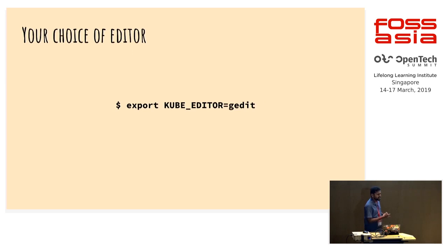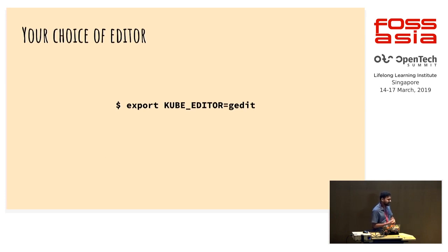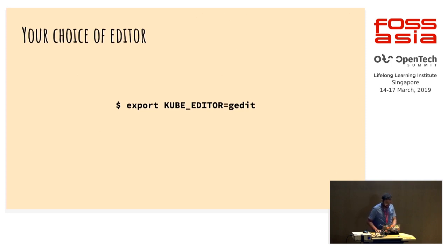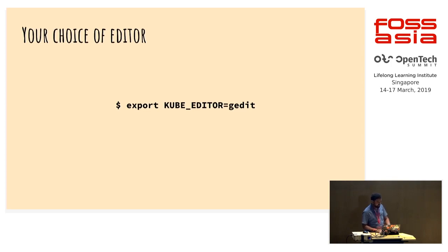Next is editor. If you add this line into your bashrc, it helps you set your own editor. Let's say you want to edit some YAML with kubectl — you can write gedit, emacs, vim, code, whatever you want. It's very useful and helpful when you work.